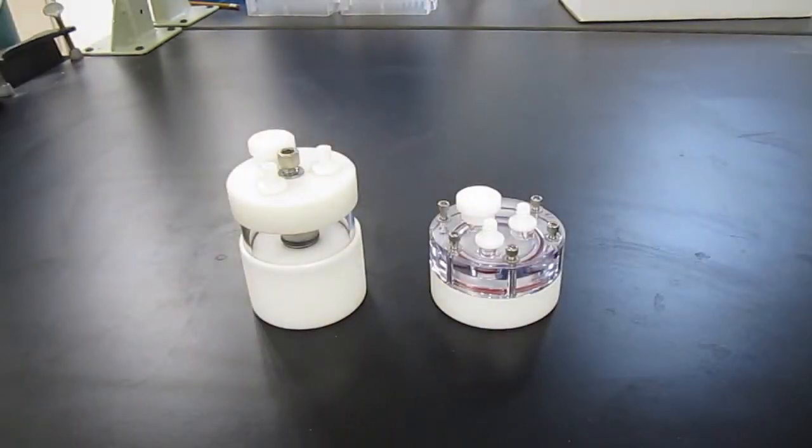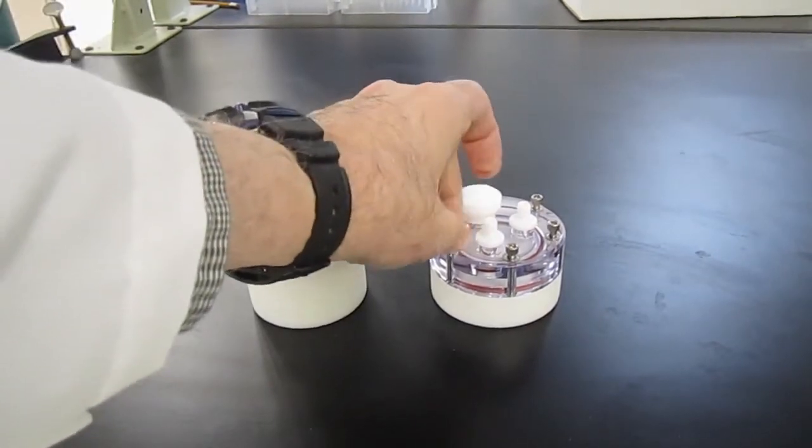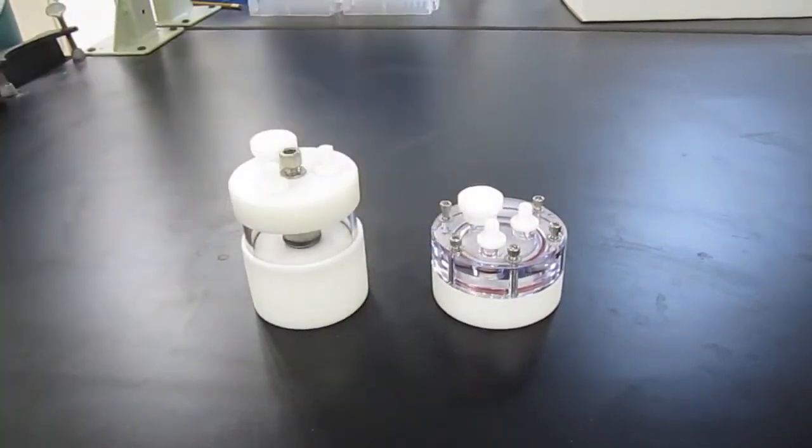After washing, the vessels can be placed in an autoclave bag or wrapped in foil and autoclaved at 121 degrees centigrade for 20 minutes. The bolts should be loosely tightened during autoclaving because the plastic parts of the vessel can expand.